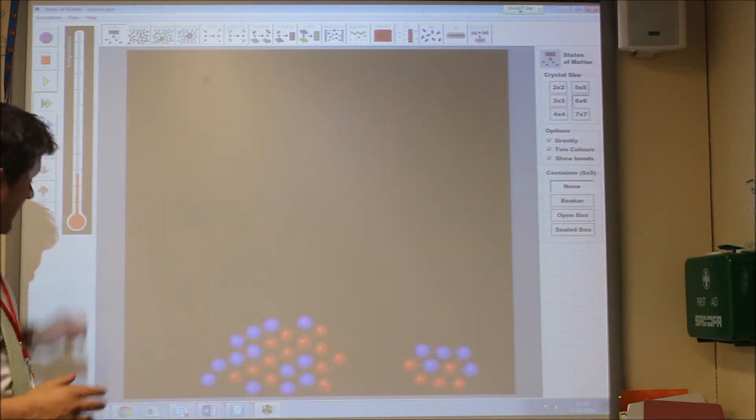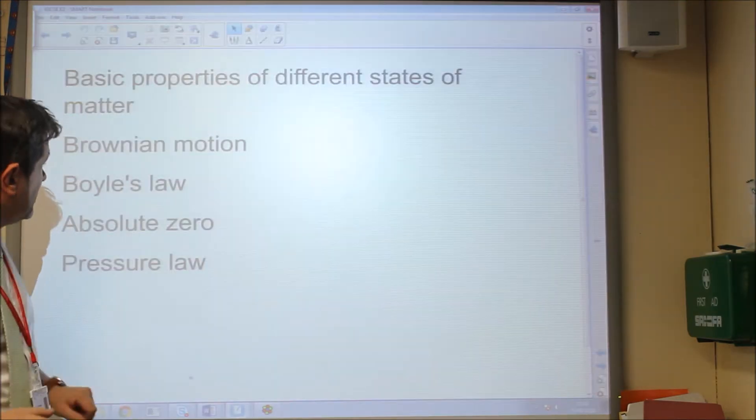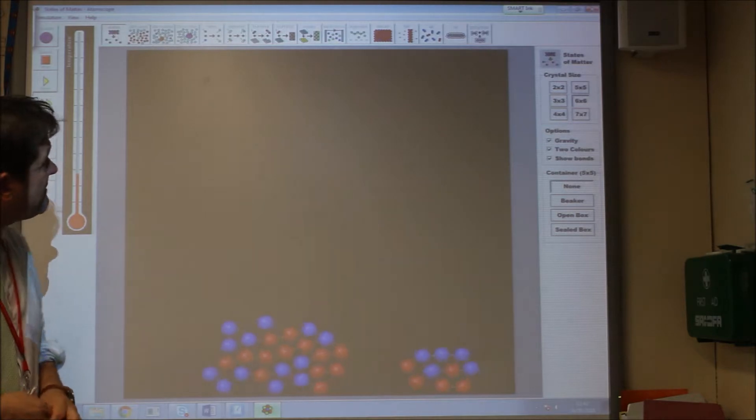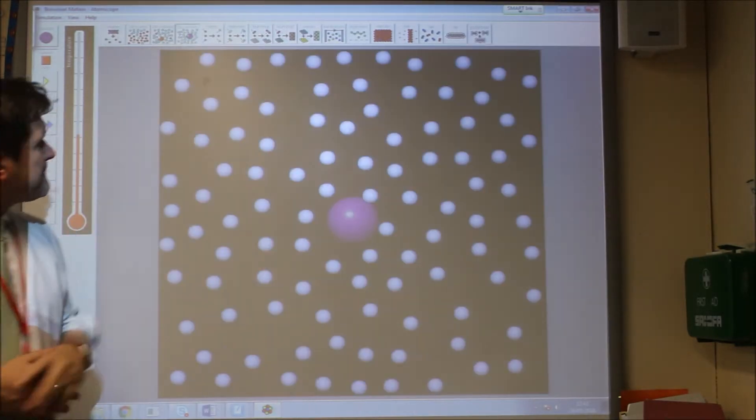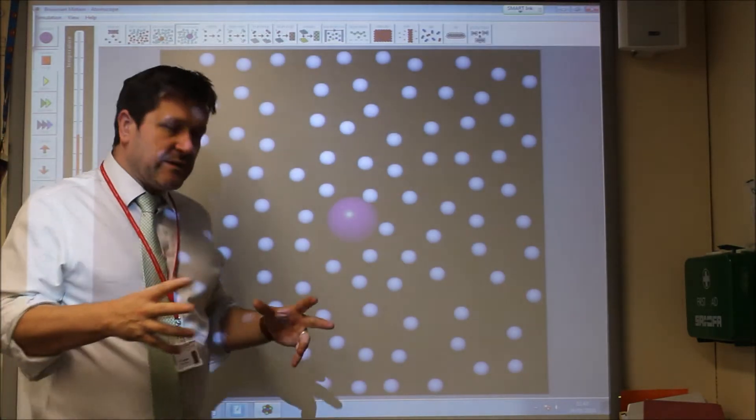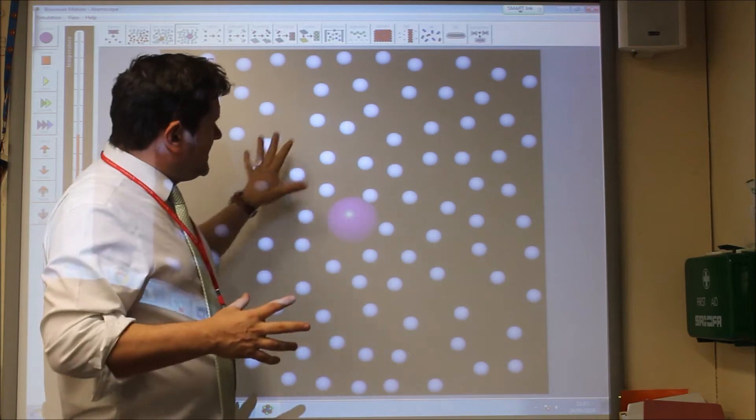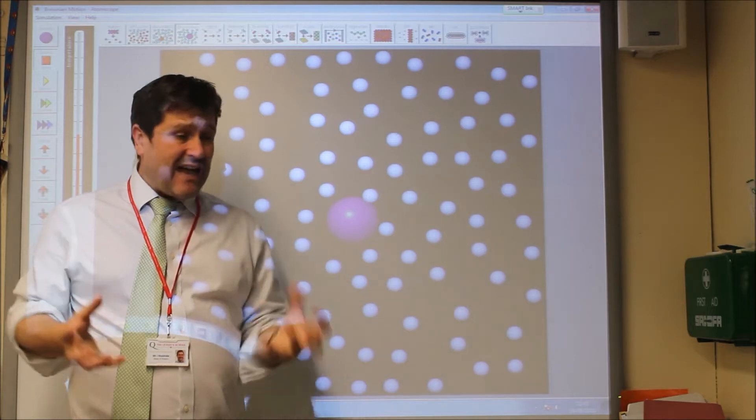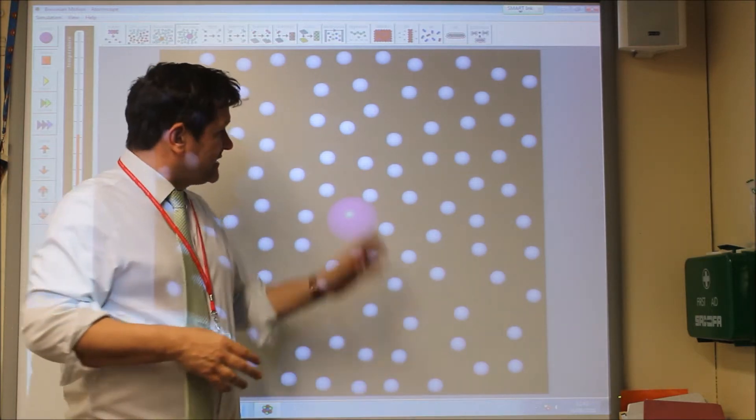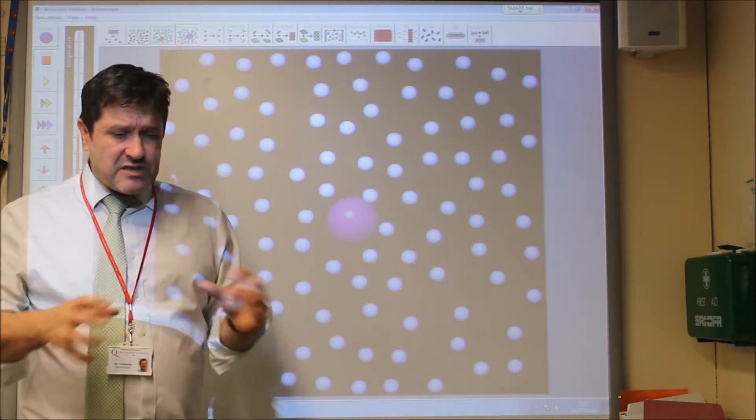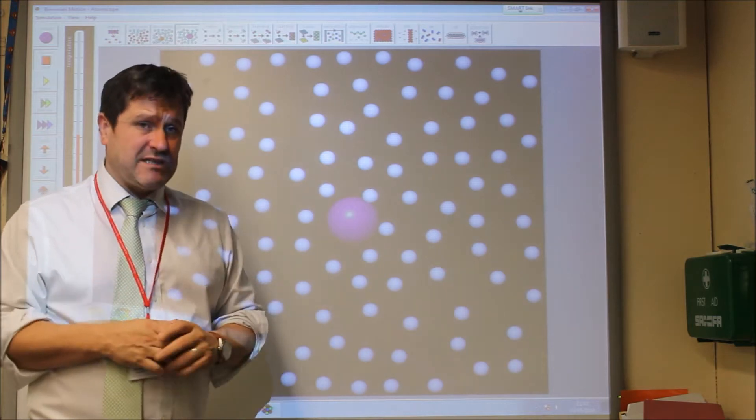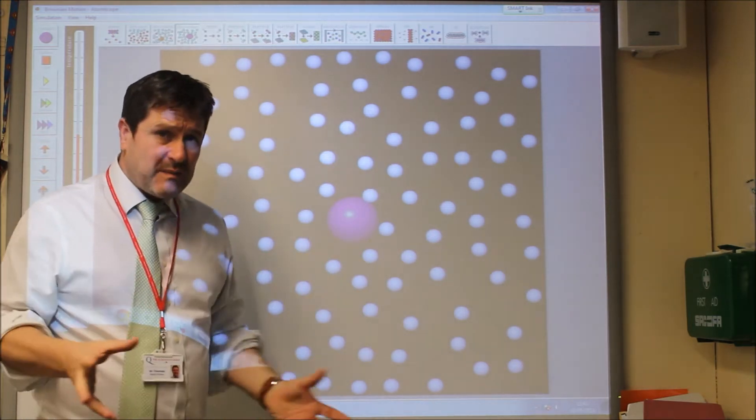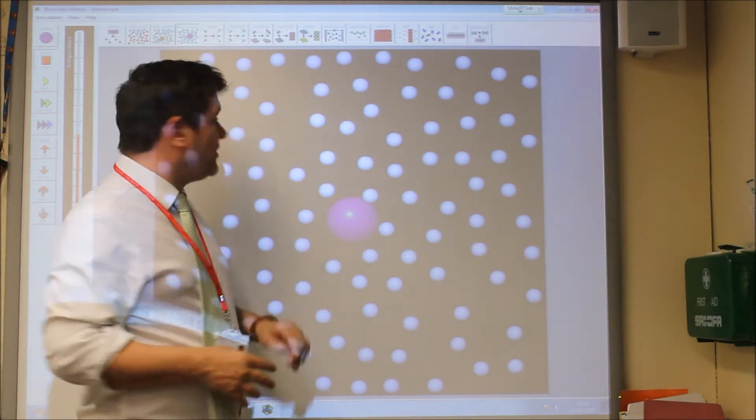Now, other things that we need to explore are the idea of Brownian motion. Brownian motion was an experiment which showed this random kinetic energy of particles. It demonstrated that gas, for example, existed as particles and that they were constantly moving in this random haphazard motion, because people were able to observe pollen grains or smoke particles.